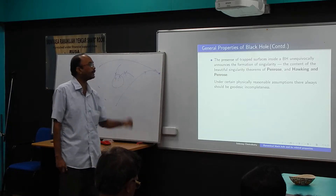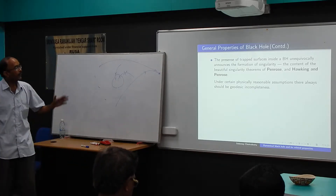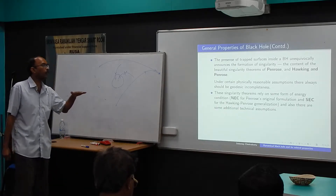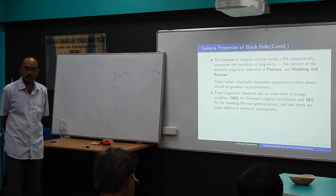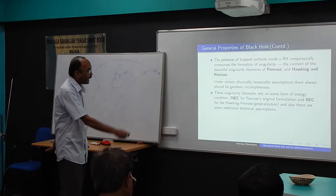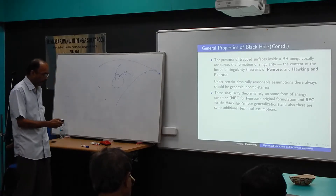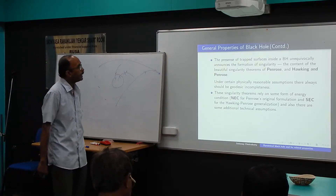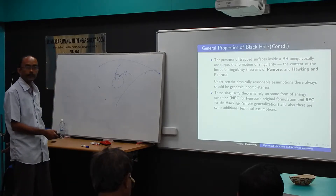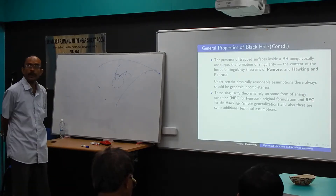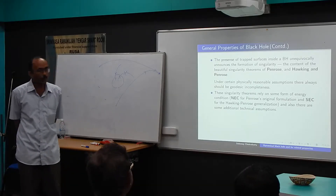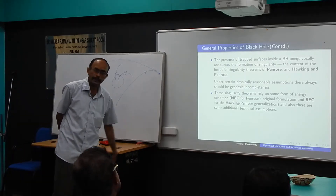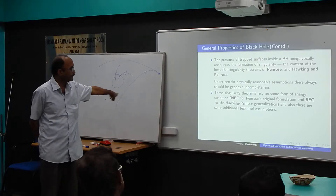If you have geodesic incompleteness, that always means you have a singularity there. That is the criterion defined by Penrose and Hawking. The first conception was given by Penrose, who required that the null energy condition be satisfied. Later, in collaboration with Hawking, he showed that even if the strong energy conditions are satisfied, singularities arise. I will discuss these energy conditions shortly, as I come to the Raychaudhuri equation.